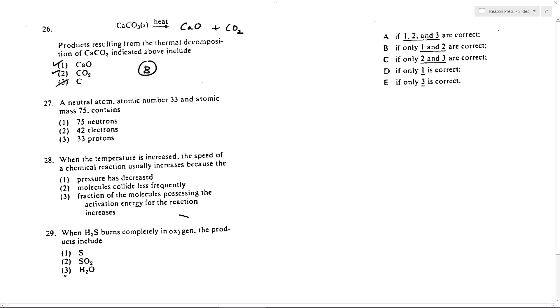Moving to 27, an atom with atomic number 33 and mass 75. Well, if it's got atomic number 33, then we know it's got, by definition, 33 protons, because that's what the atomic number means. So three looks good.